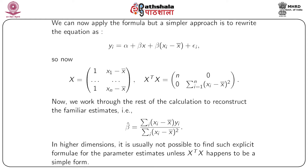We know that in simple regression the estimate of β can be written as r·(sᵧ/sₓ), where r is the correlation coefficient, or equivalently as Σᵢ(xᵢ − x̄)yᵢ / Σᵢ(xᵢ − x̄)². In higher dimensions, however, it is usually not possible to find such explicit formulas for parameter estimates unless X'X happens to be in a simpler form, so we rely on the full matrix algebra.